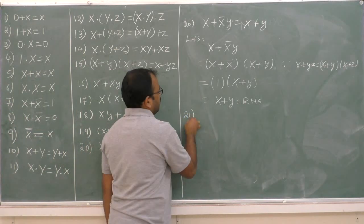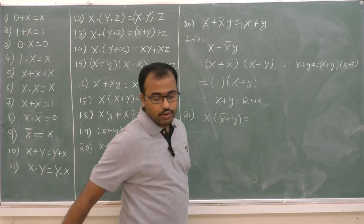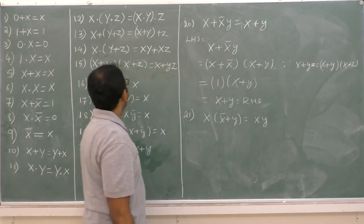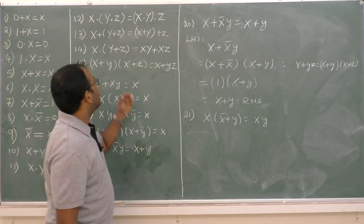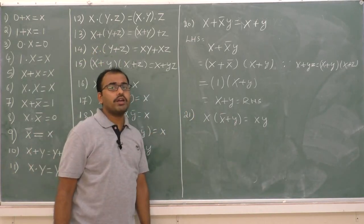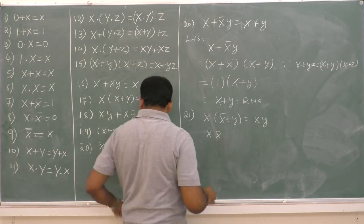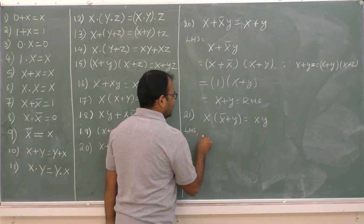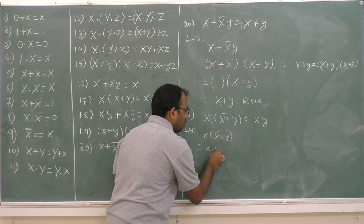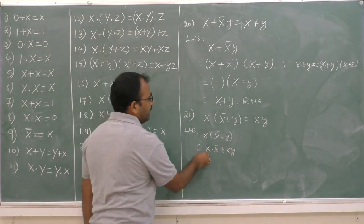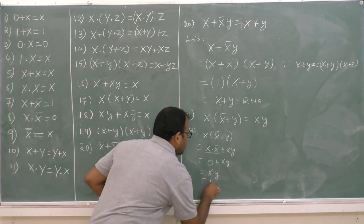At last, theorem 21: x into (x-bar plus y) is equal to xy. This is simple — we can prove it. Consider LHS: x into (x-bar plus y). Multiply out: x dot x-bar plus x dot y. Now x dot x-bar is 0. Therefore, 0 plus xy, which is equal to xy, which is the RHS.